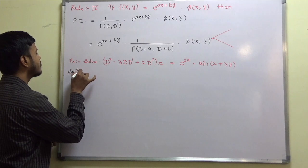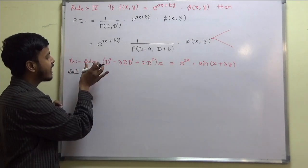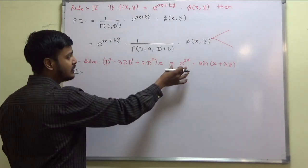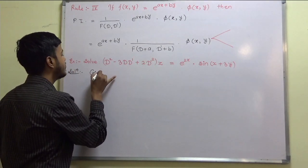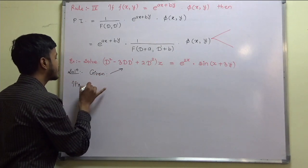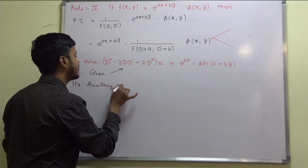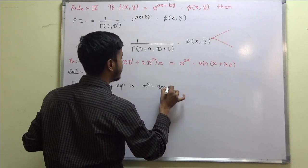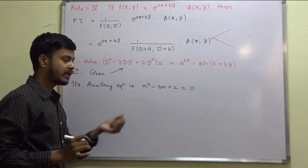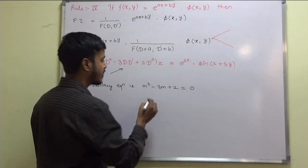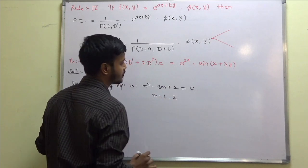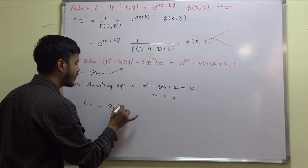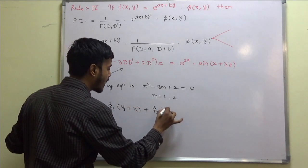So whenever we have a given equation with a function on the right-hand side, we first need to find the complementary function. The auxiliary equation is obtained by putting D = m and D' = 1, giving m² - 3m + 2 = 0. We have seen such equations in previous lectures, so writing directly: m = 1 and m = 2. With these roots, the complementary function is CF = φ₁(y + x) + φ₂(y + 2x).